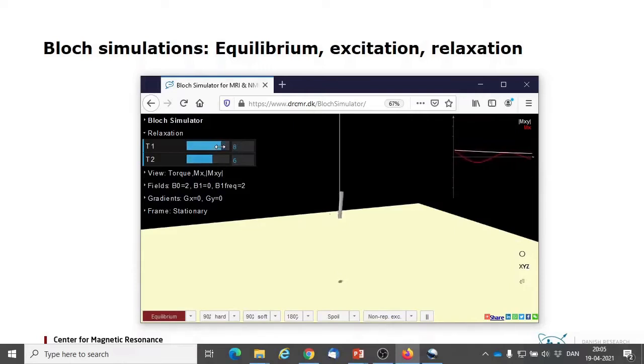For both kinds of magnetization, the approach to equilibrium is exponential, but remember that longitudinal and transversal magnetization have different equilibrium values.